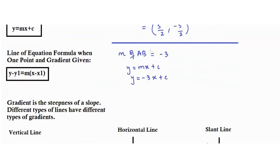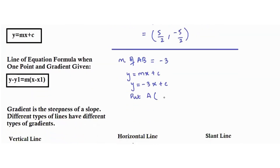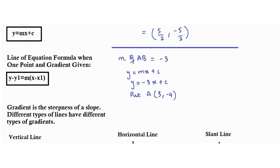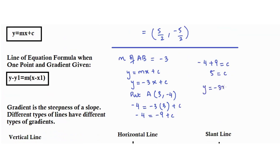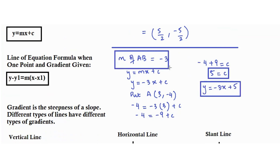We substitute point A, which is (3, -4), into the equation. So negative 4 equals negative 3 times 3 plus c, which gives negative 4 equals negative 9 plus c, so negative 4 plus 9 equals c, which is 5. Therefore y equals negative 3x plus 5. This is the slope-intercept form for the line connecting A and B.